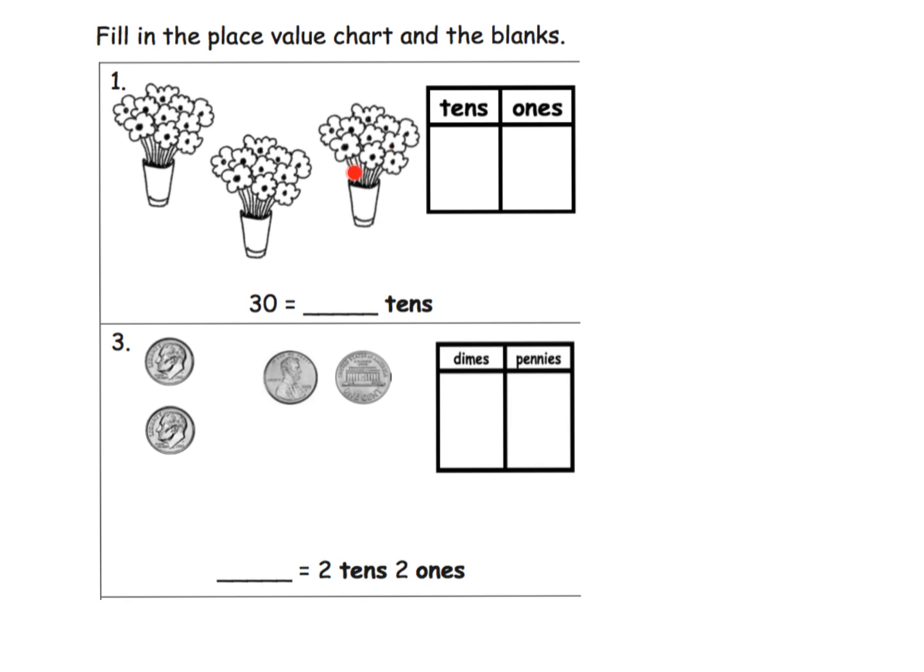So we're going to just connect those pennies and dimes to the place value chart that we've been doing. So a quick recap, what do we have here? Well, we have three sets of ten. So we're going to label that three sets of ten. Now how many sets of ones do we have? And the answer is none. We have no ones. So 30 is equal to three tens.